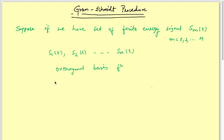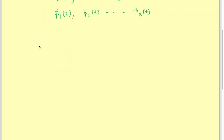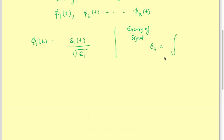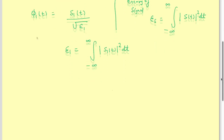The orthogonal basis functions will be phi_1(t), phi_2(t), up to phi_k(t). What is phi_1(t)? phi_1(t) is nothing but s1(t) divided by the square root of the energy of signal s1. The energy of a signal is E_s = integral from minus infinity to infinity of |s(t)|² dt.